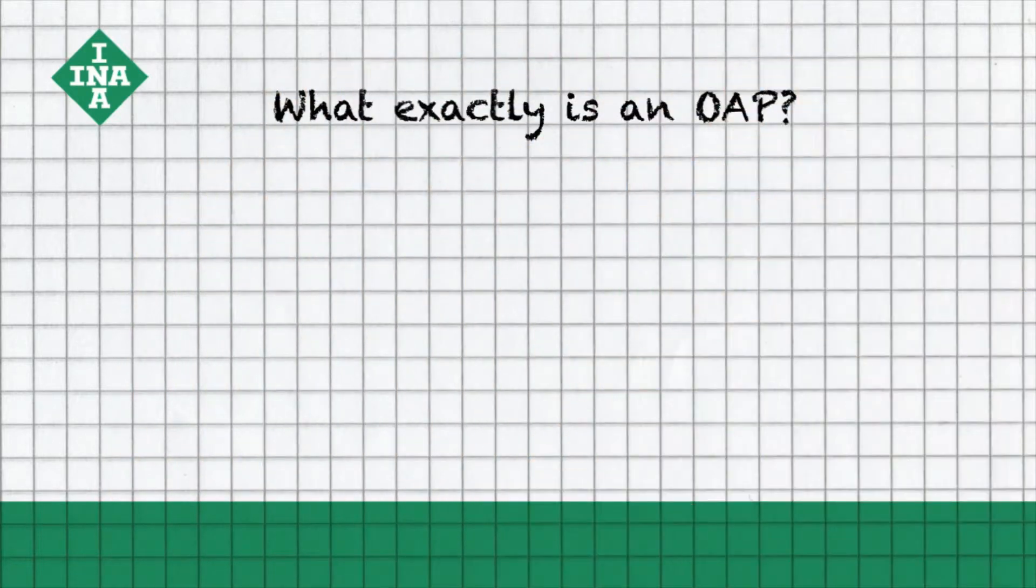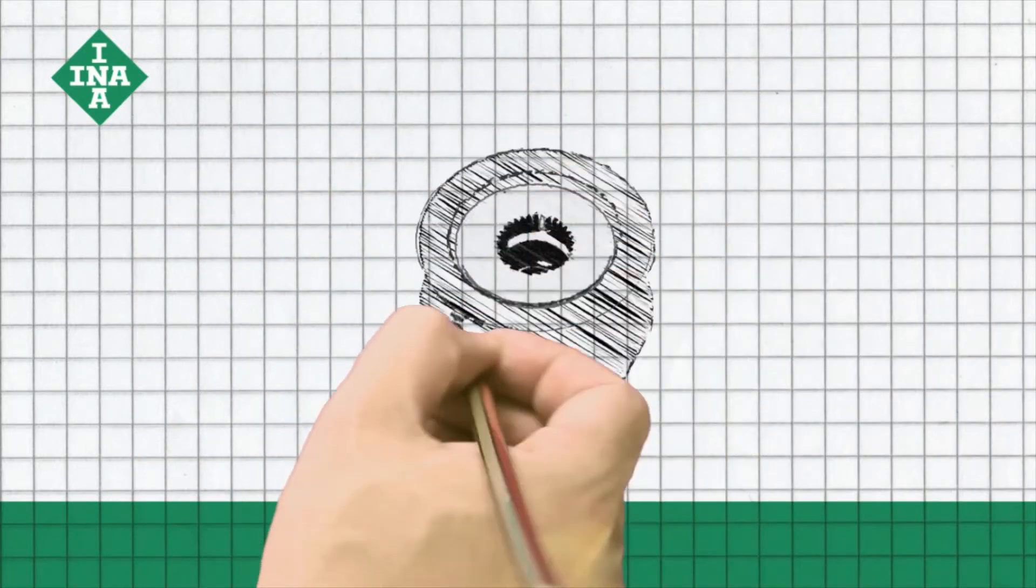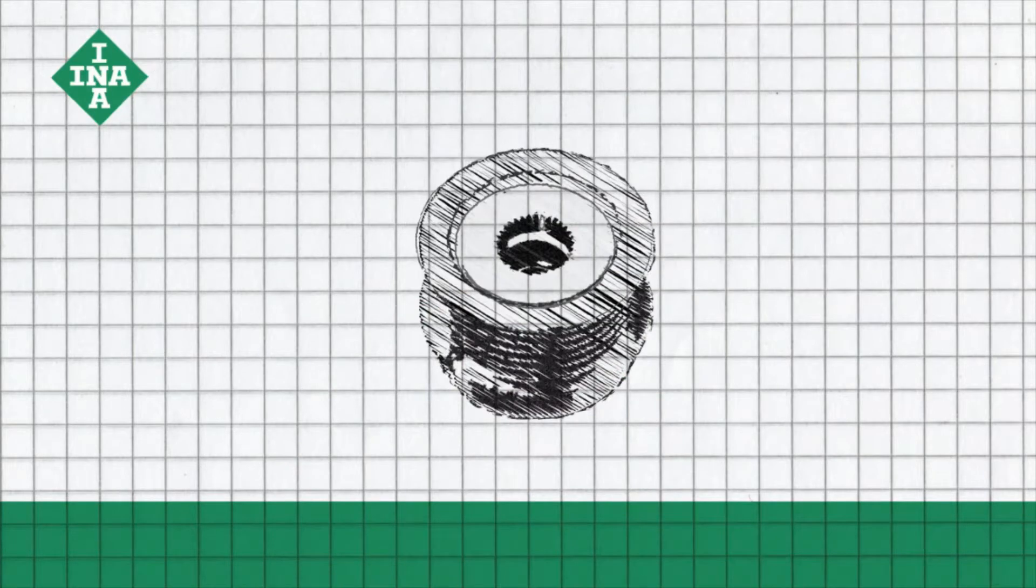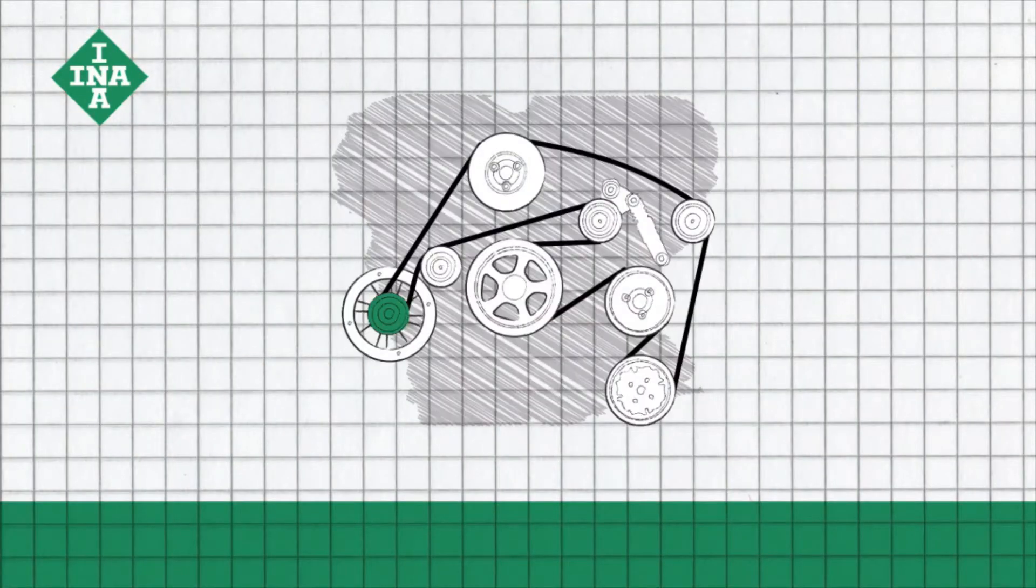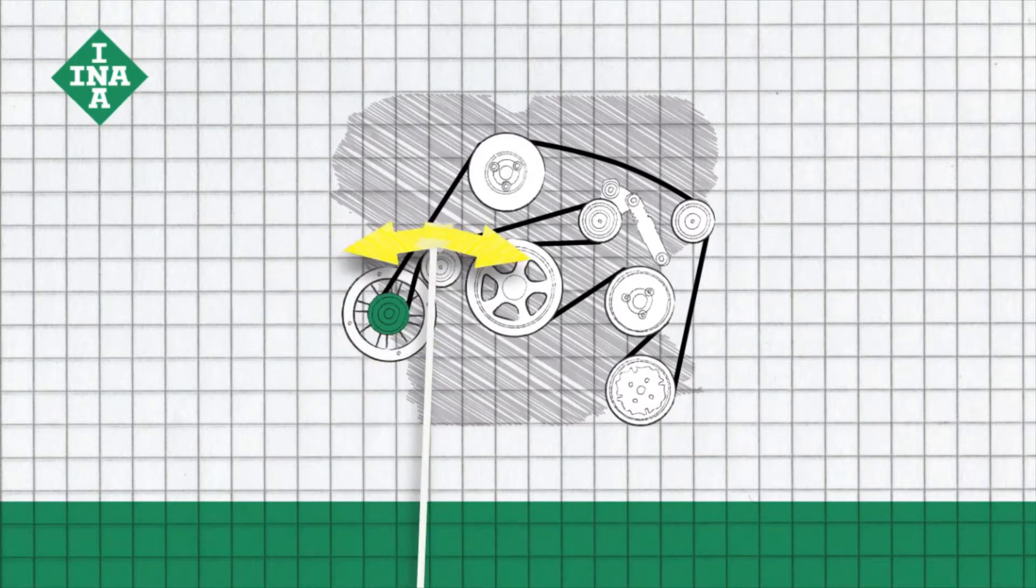What exactly is an OAP? An OAP is the overrunning alternator pulley from INA. A solution for accessory drives that, in contrast to traditional rigid belt pulleys, allows rotational movement to dampen vibrations.